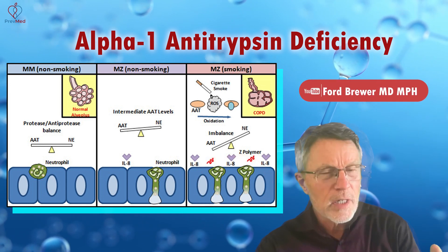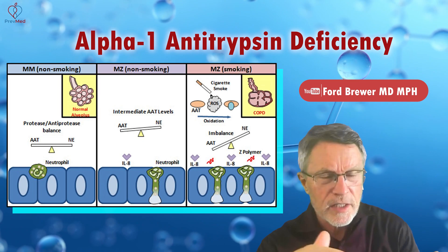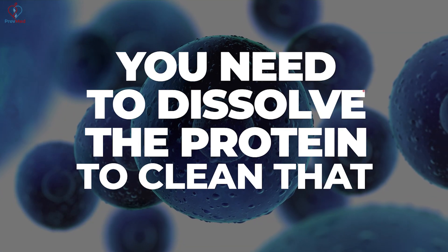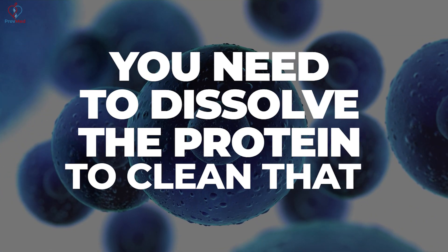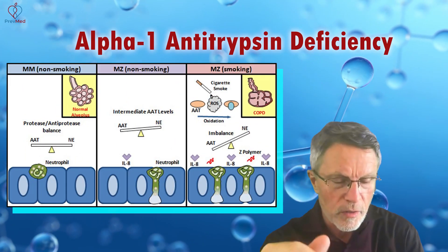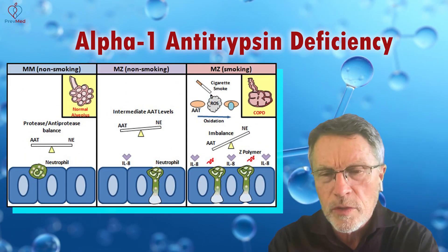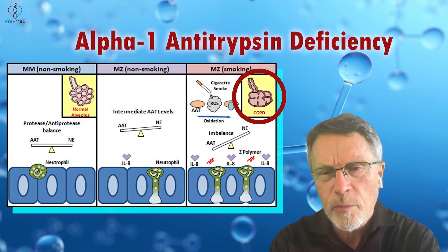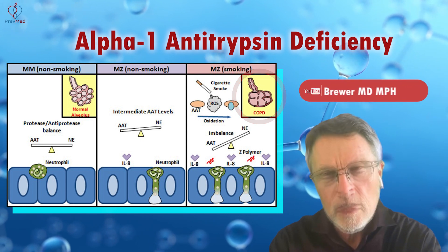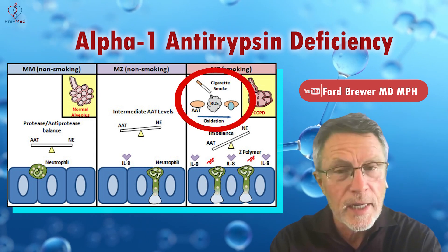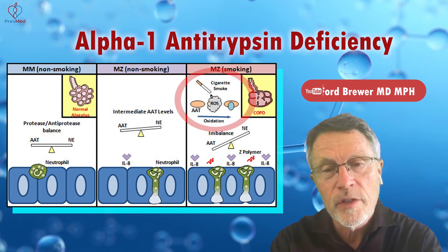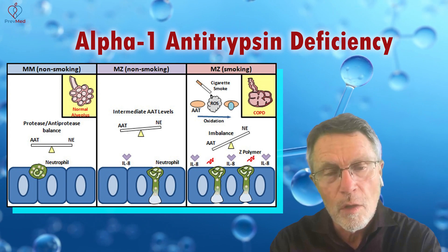In order to clean up inflammation, there are dead cells lying around and you need to dissolve the protein to clean it up. But if you have too much protein dissolution going on — if you're dissolving too much protein — you can dissolve live protein. That's what happens in emphysema associated with smoking and with alpha-1 antitrypsin deficiency: you get loss of the structure of the alveolar wall.